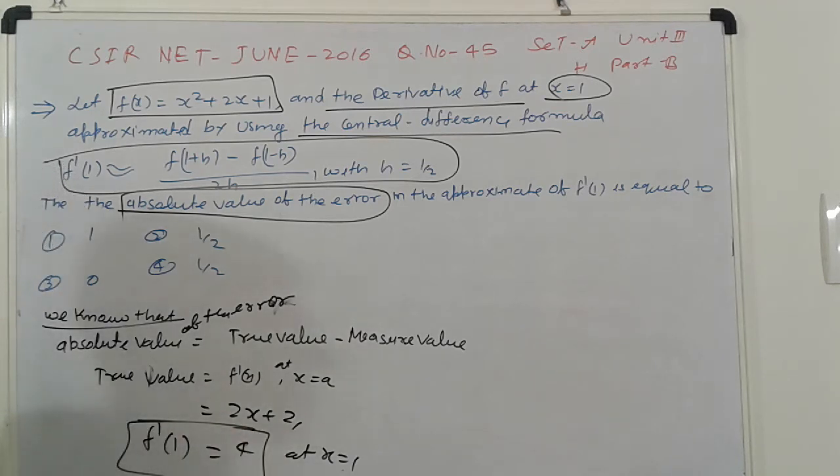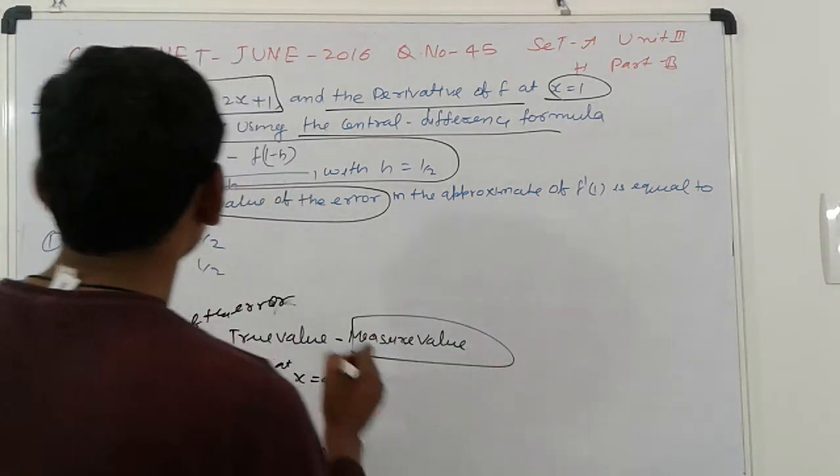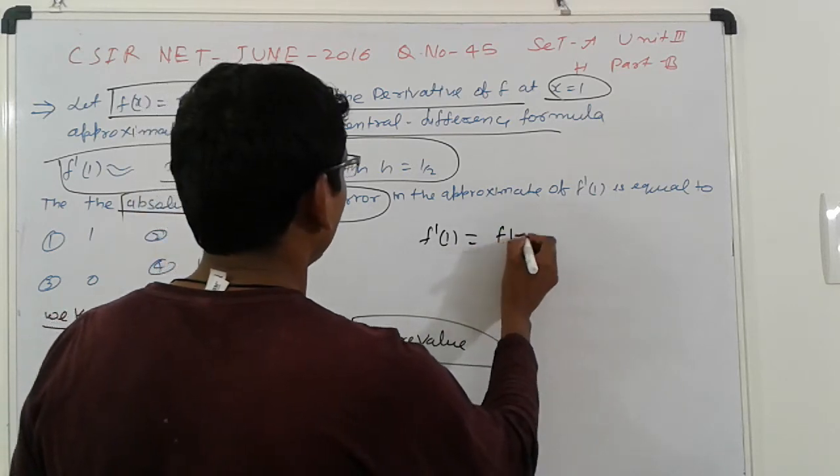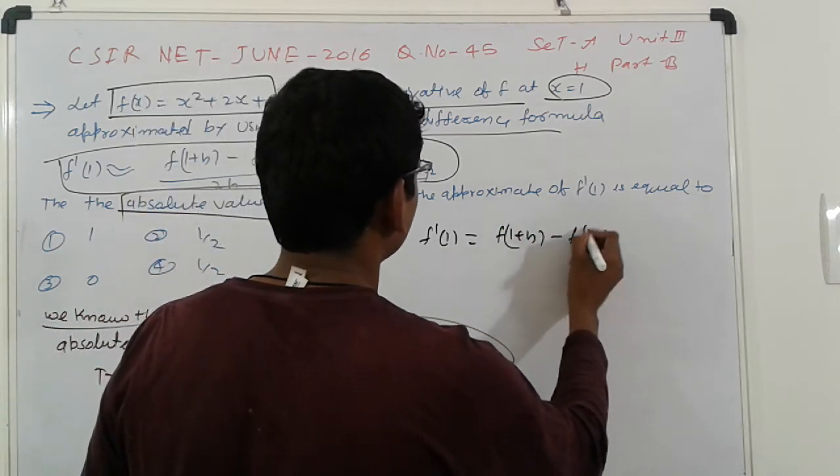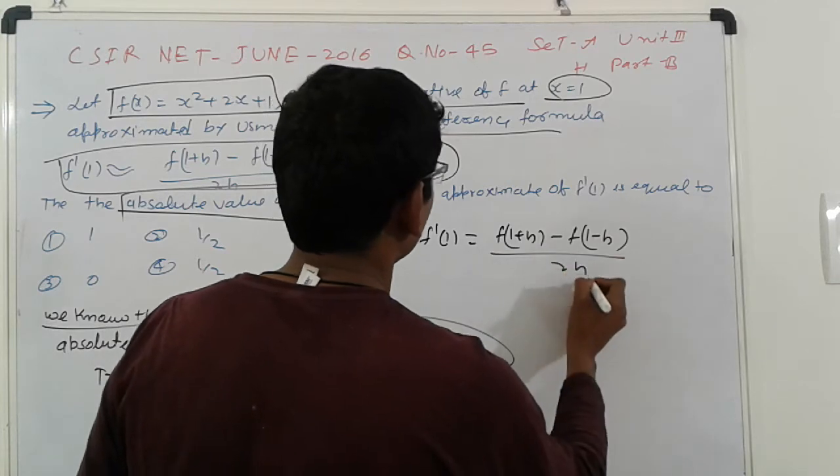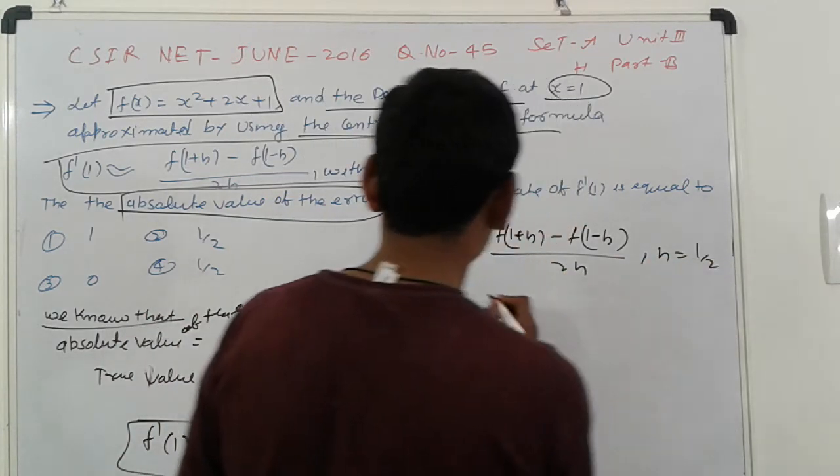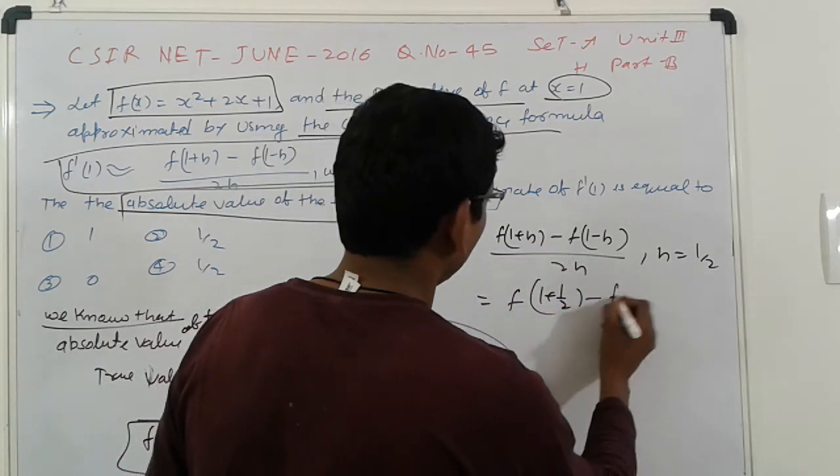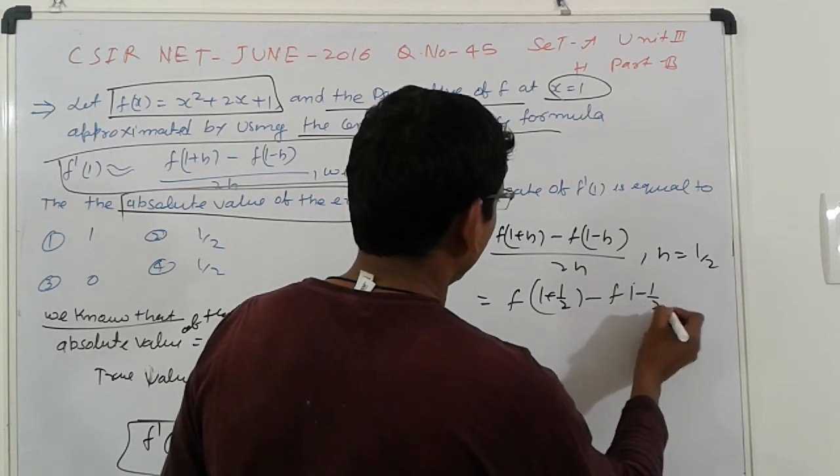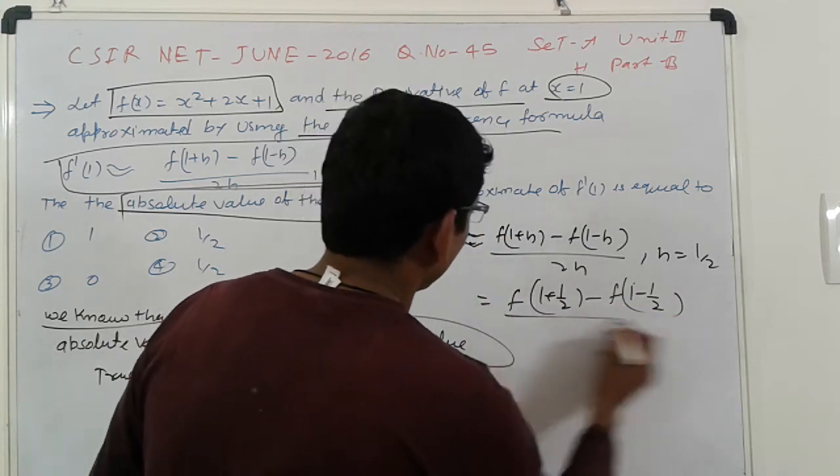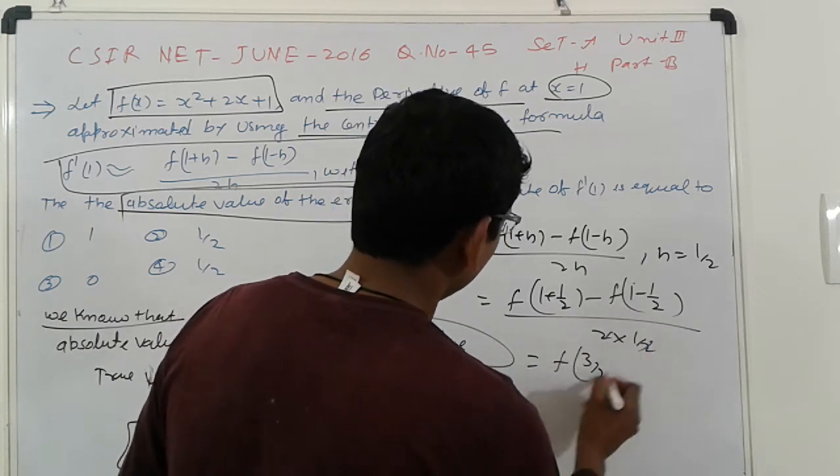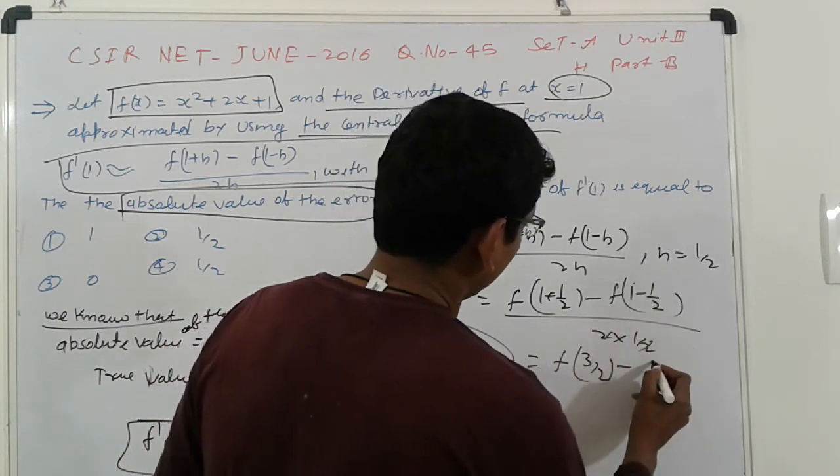Find out this is true value. Next here measure, find out this measure value. Here given f'(1) is equal to f(1 + h) - f(1 - h) divided by 2h and h = 1/2. So put here f(1 + 1/2) - f(1 - 1/2) upon 2 into 1/2, so that cancel f(3/2) - f(1/2).